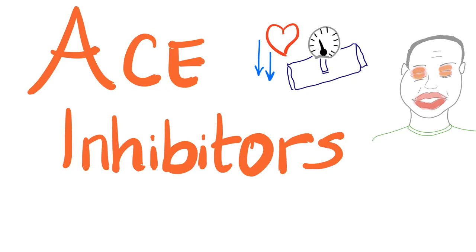Another day, another hematology video. In the previous videos, we have talked about bradykinin, hereditary angioedema, as well as acquired angioedema. Today, we'll talk about ACE inhibitors, the famous anti-hypertensive medication, good for congestive heart failure, by inhibiting the angiotensin-converting enzyme. It causes dry cough, angioedema, hyperkalemia, and maybe kidney problems.